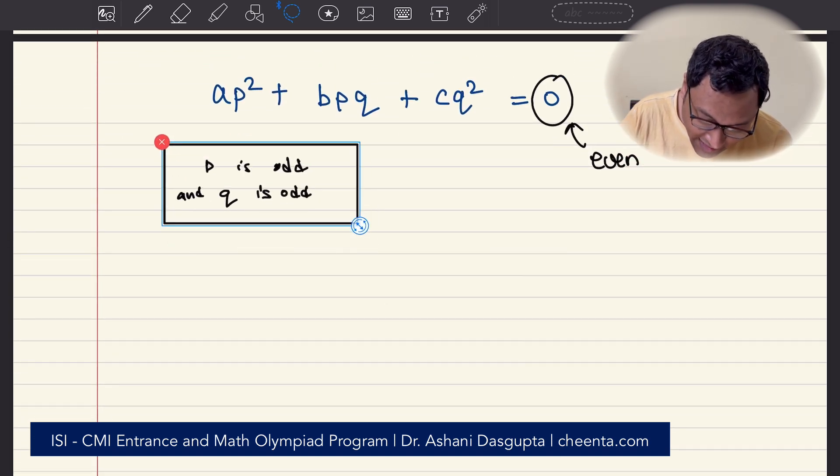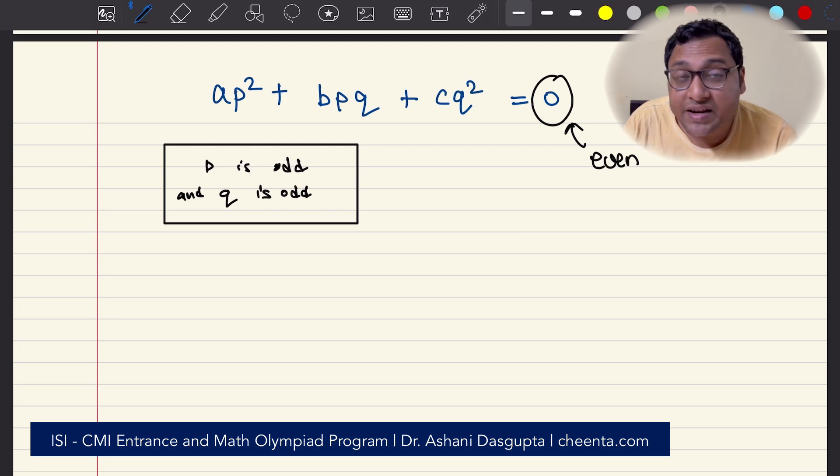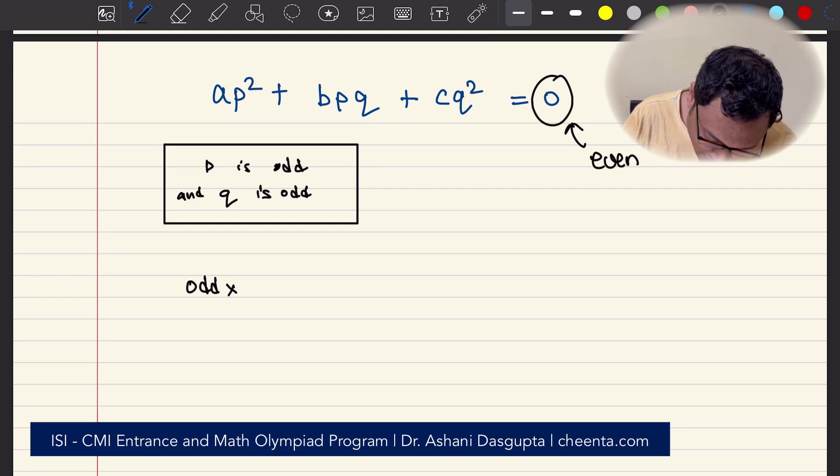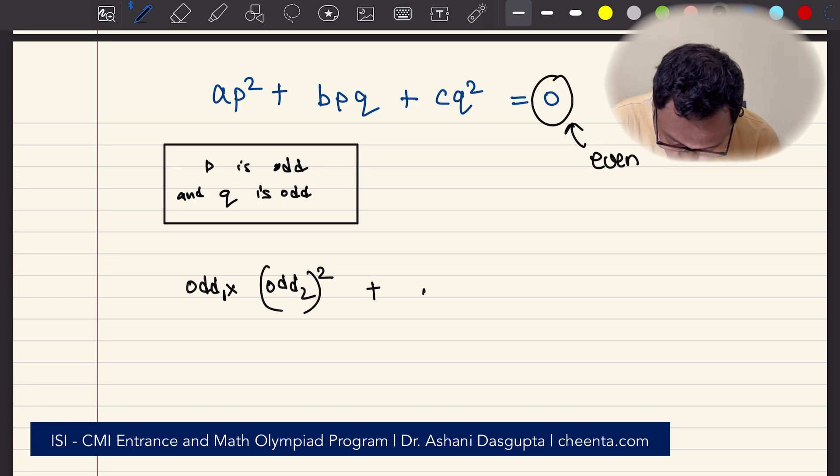What do we have? We already know A, B, C are distinct odd numbers. So we have odd times odd₁ times odd₂ whole square plus B is odd, so odd₃.